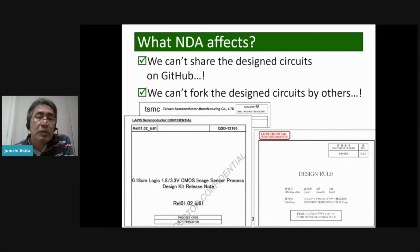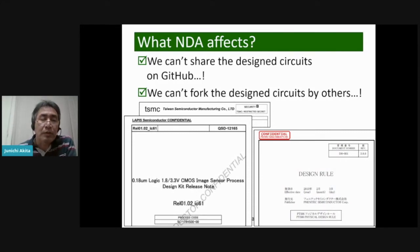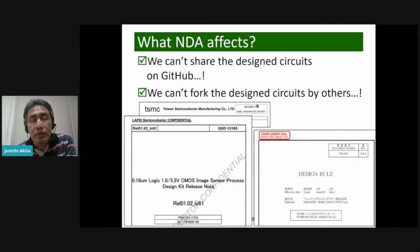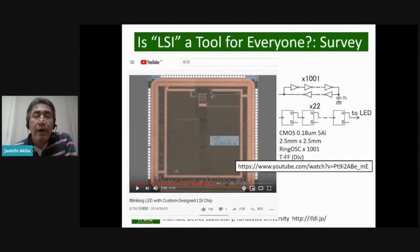Since there is a very strict NDA, we cannot share designed circuits as open source hardware. We also cannot fork design circuits created by others because of the NDA. So NDA is one of the most severe and important problems to making designs open source.